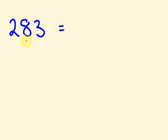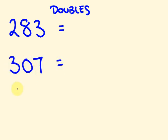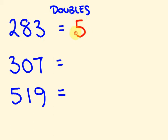I'll give you a few examples to try: 283, 307, and 519. See how you go with those — you should be able to start writing down the answers automatically. For 283: the last digit 3 is not above 4, so we don't add 1. Double 28 is 56, and 3 doubled is 6. Answer: 566.